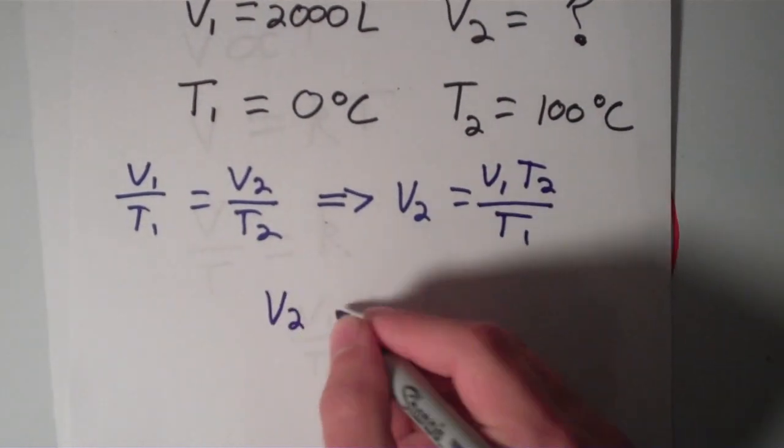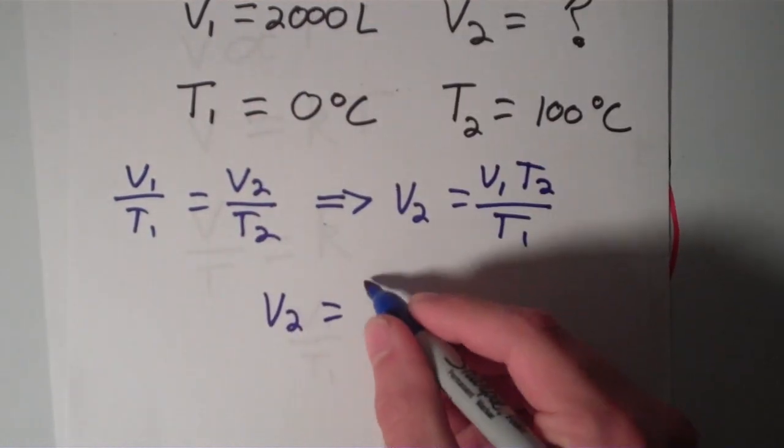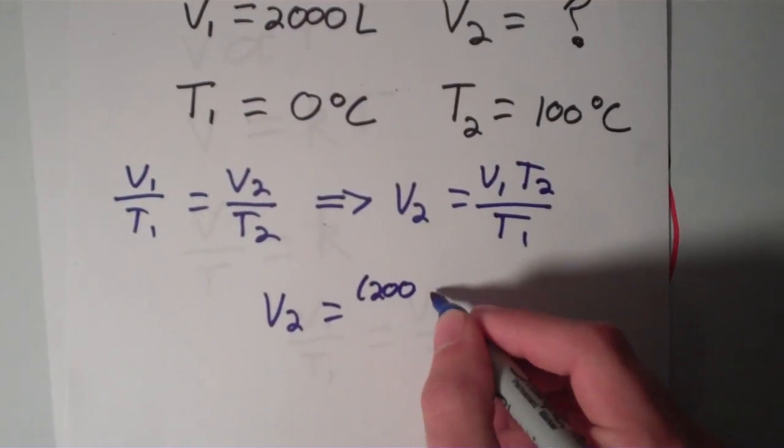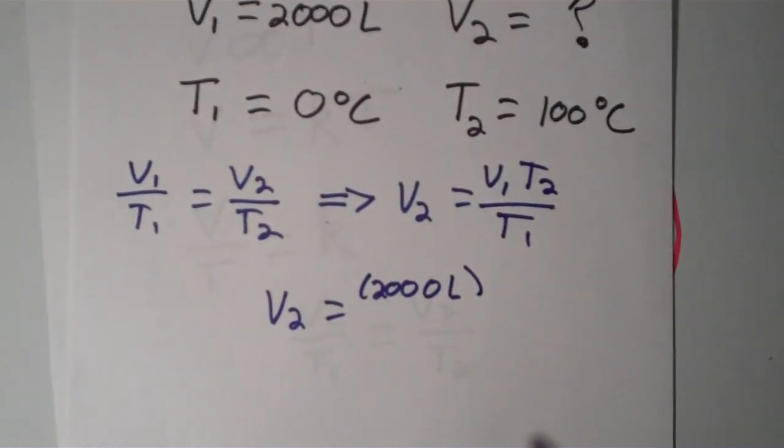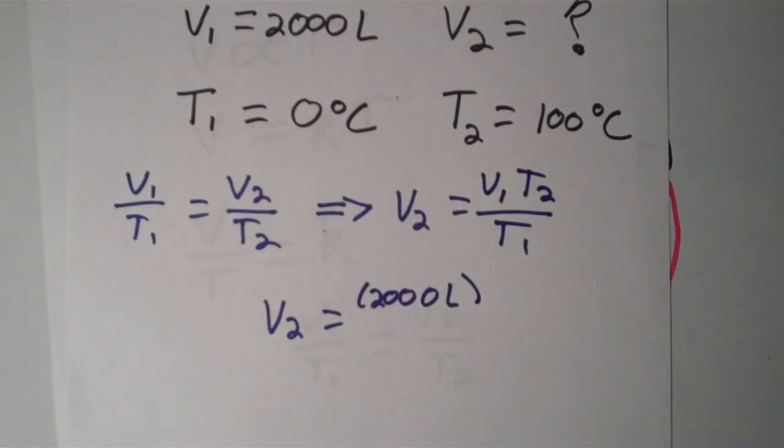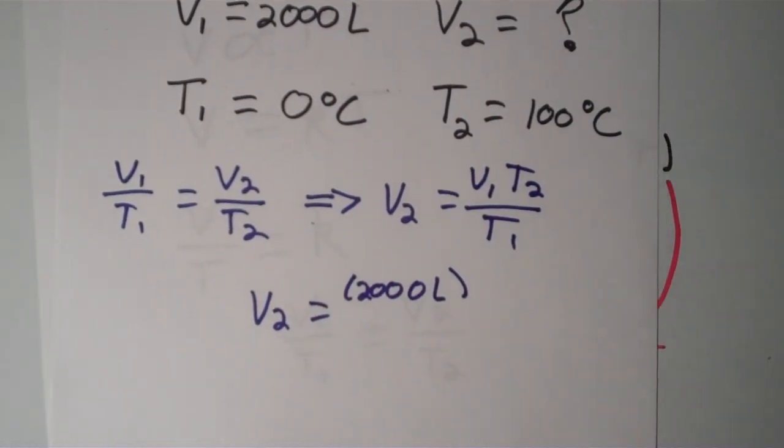So I'm just going to plug it in. We'll just put it down here. V2 is equal to V1, that's 2,000 liters. T2 is 0 degrees Celsius, but we can't put 0 in here, that wouldn't make sense, that would just give a volume of 0. And the reason why is because, anytime you're working with gas laws, it doesn't matter which, you need to use absolute temperatures. So the temperature scale that you have to convert to is the Kelvin scale. So to convert from Celsius to Kelvin, remember, we just add 273 degrees.